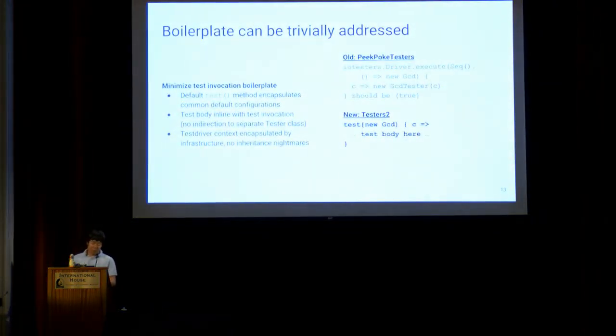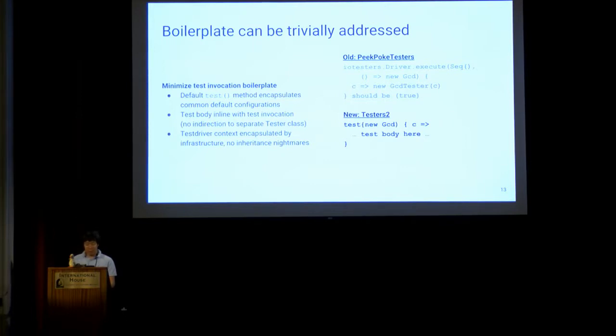Some of them, like that last point I just made, have pretty trivial solutions. For example, the arcane driver invocation API could be simplified to something that provides sensible defaults and asks for minimum information. Here it just asks for the DUT constructor. And the indirection problem is also trivially solvable. Just move the code into the test body. That was easy.